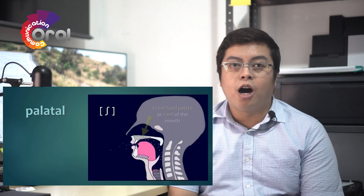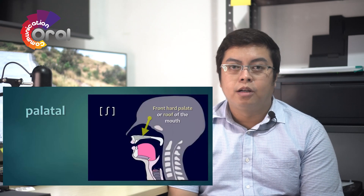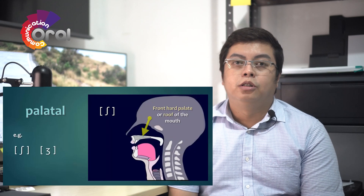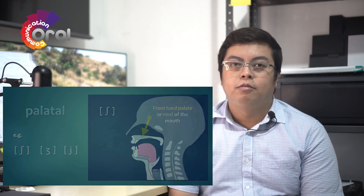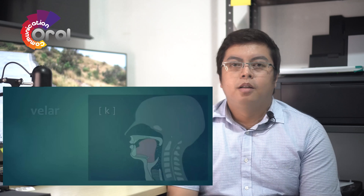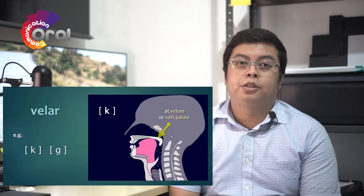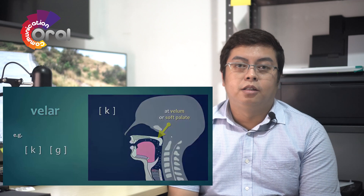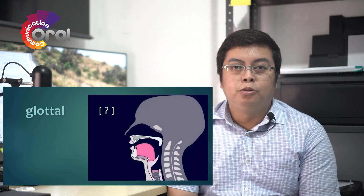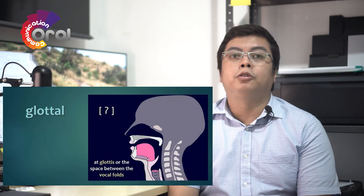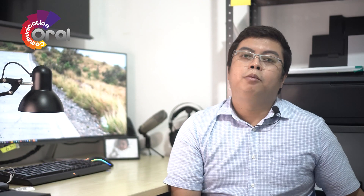Palatal sounds are produced at the hard palate, or the roof of the mouth, such as 'yeah.' Velar sounds are produced at the velum, or the soft palate. Glottal sounds are produced at the glottis, the space between the vocal folds.